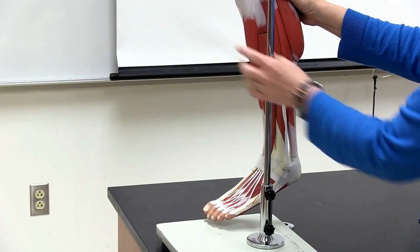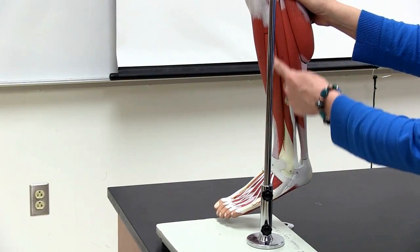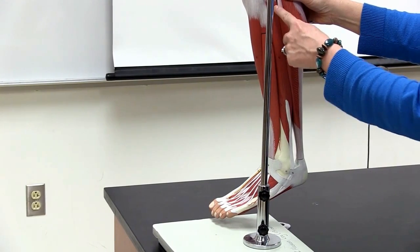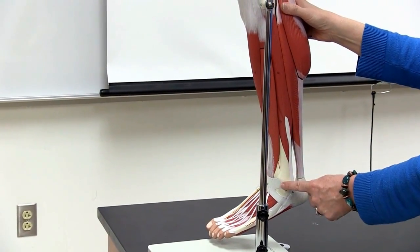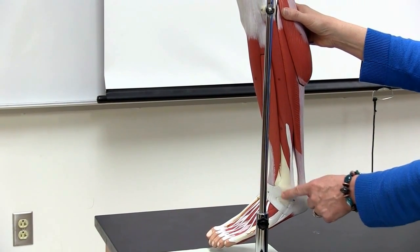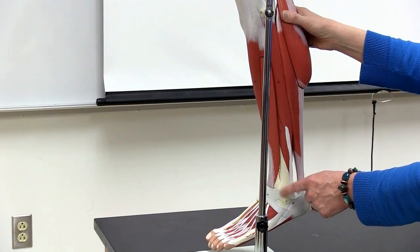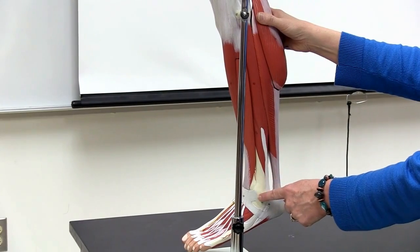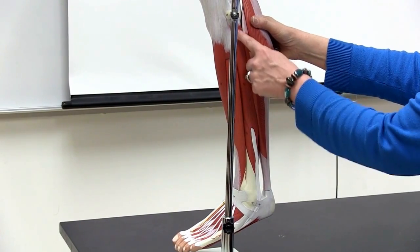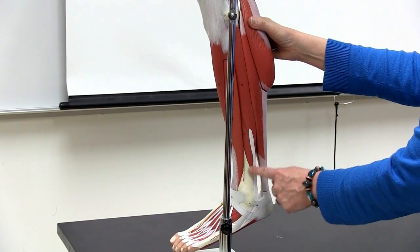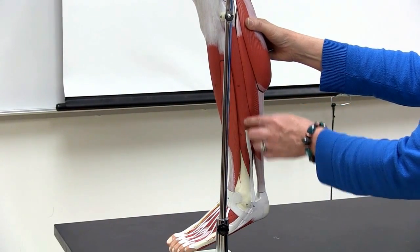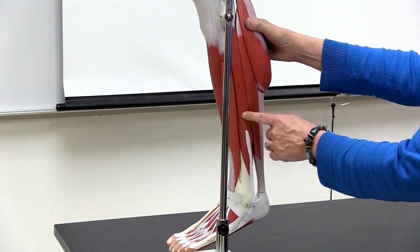The next muscle coming around, next to extensor digitorum longus, is going to be on the side with the fibula bone. You see the malleolus here of the fibula, the lateral malleolus. This muscle is named for that bone, so this one is called fibularis. There's another name for this muscle though, called peroneus.